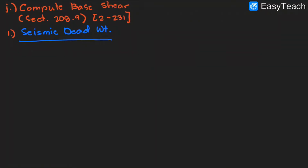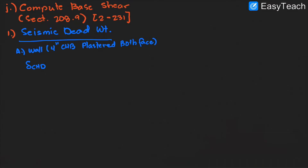In continuation, we have the seismic dead weight, starting our analysis on the wall specifications. For the concrete wall, let's assume we have a 4-inch CHB wall plastered on both faces. Based on NSCP 2015, the density of CHB is equal to 44 pounds per square foot (PSF), converting that to 2.107 kilopascal, or rounding to 2.2 kilopascal — that is our CHB density.